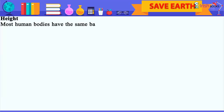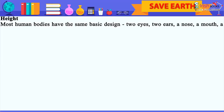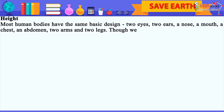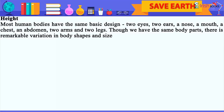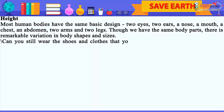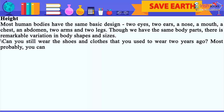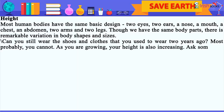Most human bodies have the same basic design: two eyes, two ears, a nose, a mouth, a chest, an abdomen, two arms and two legs. Though we have the same body parts, there is remarkable variation in body shapes and sizes. Can you still wear the shoes and clothes that you used to wear two years ago? Most probably you cannot. As you are growing, your height is also increasing.